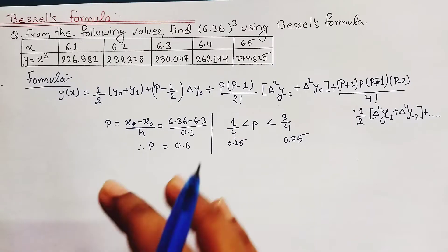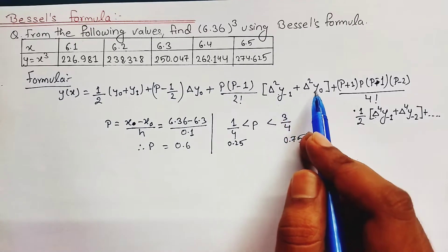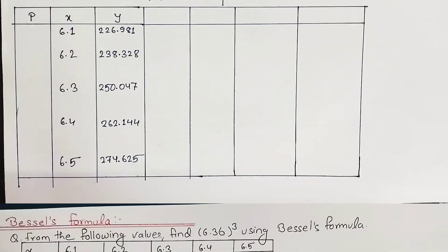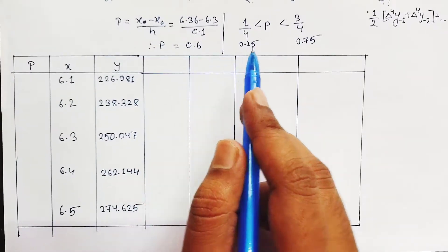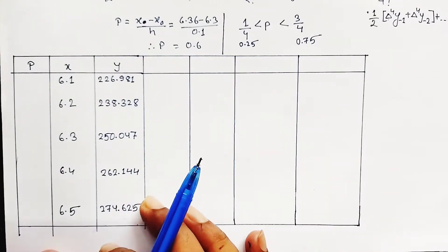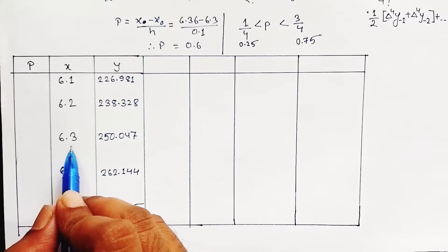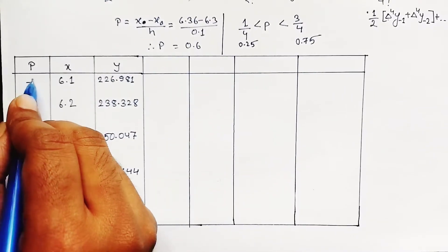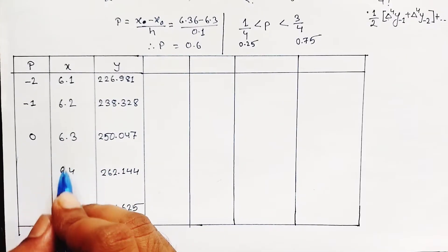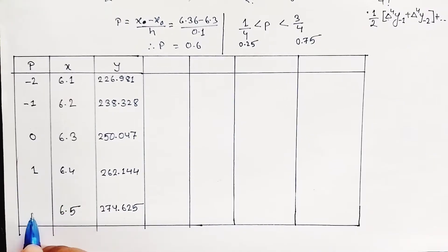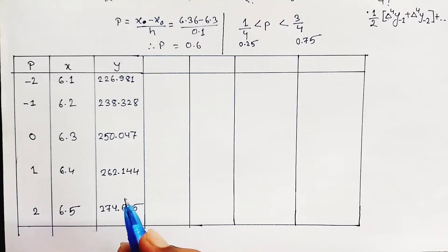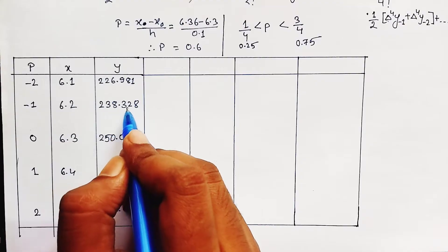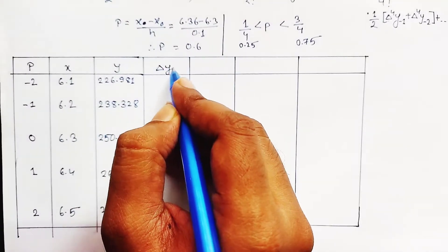Now we need to draw a difference table to find the values of Δy₋₁, Δy₀, Δ²y₋₁, Δ⁴y₋₁, and so on. Since 6.36 lies between 6.3 and 6.4, we label 6.3 as row 0, the row above as −1, and the row below as 1. We will find Δy by subtracting successive y-values.